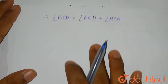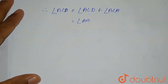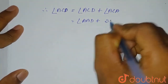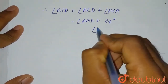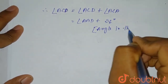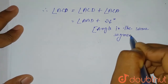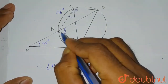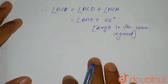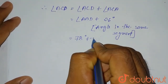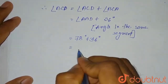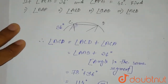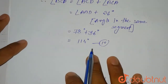That means both angles will be equal, so in place of ACD we can write angle ABD, plus the value of angle BCA which is 36 degrees. ACD equals ABD because they are angles in the same segment. We found that angle ABD equals 78 degrees, so it will be 78 degrees plus 36 degrees, which equals 114 degrees. This is our fourth answer, and we have now found all four answers to this question.